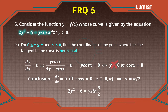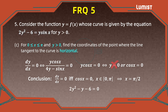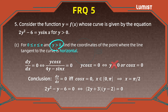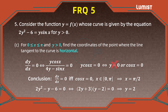Now we plug x equals π/2 into the original equation to find y. We get: two y squared minus six equals y times sine(π/2), and since sine(π/2) equals one, this becomes two y squared minus y minus six equals zero. Factoring: (2y + 3)(y − 2) equals zero. Since y must be positive, the only valid solution is y equals two. So the coordinates are x equals π/2 and y equals two.